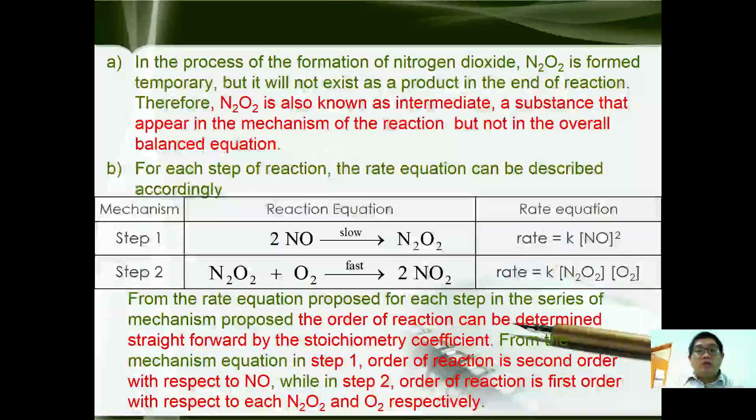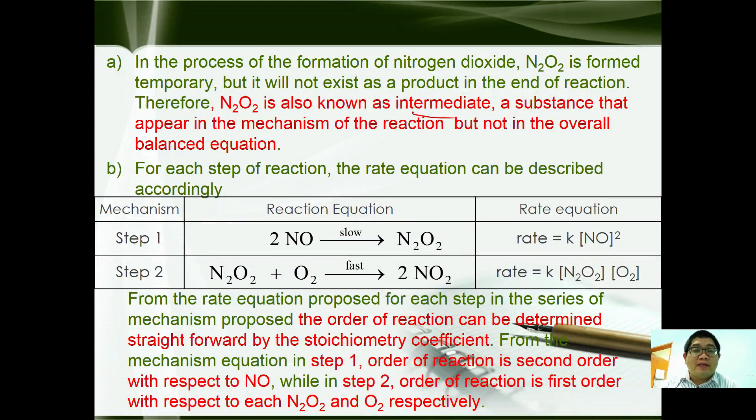Therefore, N₂O₂ is also known as an intermediate — a substance that appears during the mechanism of the reaction but not in the overall balanced equation.